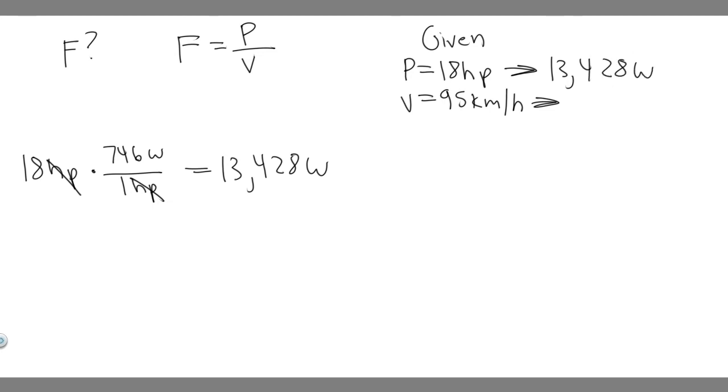Now we need to change the velocity into meters per second. Take 95 kilometers per hour and multiply by 1,000 meters for every one kilometer. That gives us meters, but we need it in seconds too. There's one hour for every 3,600 seconds. We need that on the bottom to cancel the hours from top to bottom.